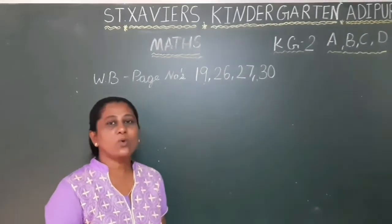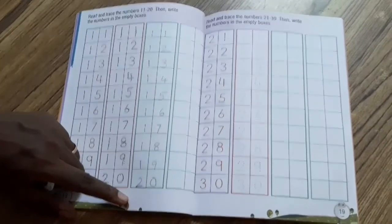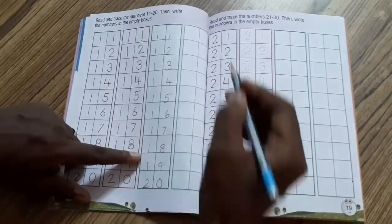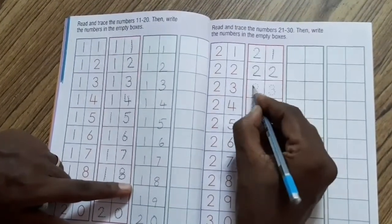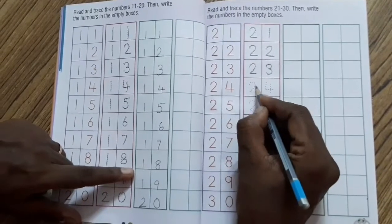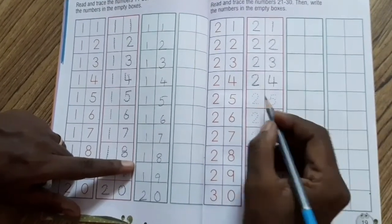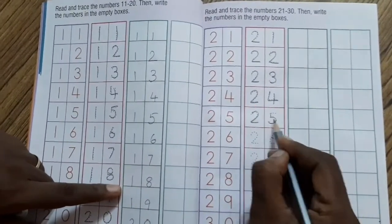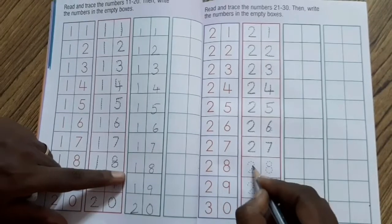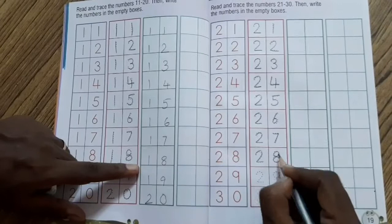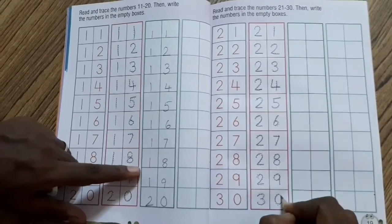I am going to write numbers 21 to 30. Of course, you are going to write numbers 21 to 30. Right over here. 21, 22, 22, 23, 23. I am going to write numbers 21 to 30. Before, you can write numbers 24, 24, 25, 25, 26, 26, 27, 27, 28, 28, 29, 29, 30, 30. This is neat and clean. Understood?